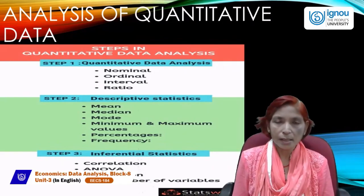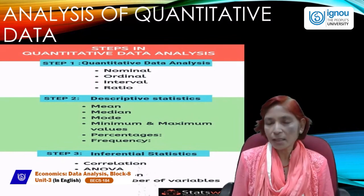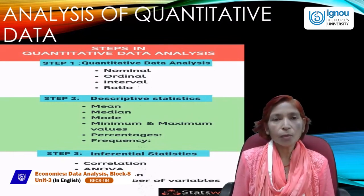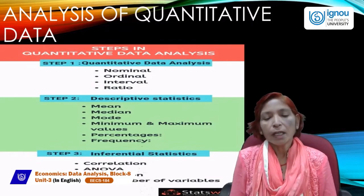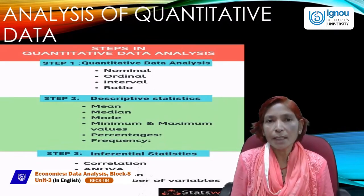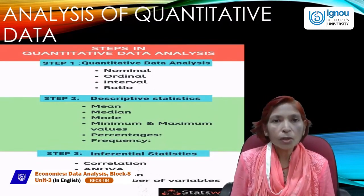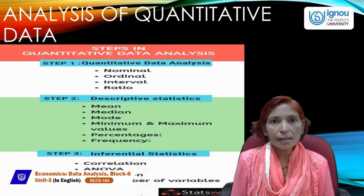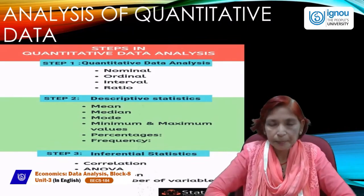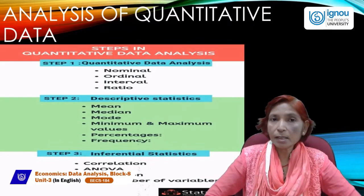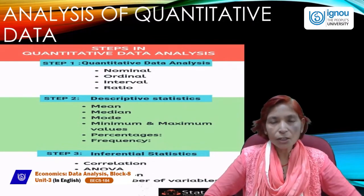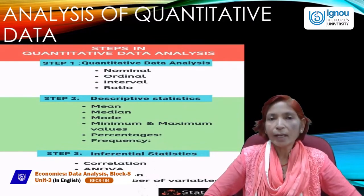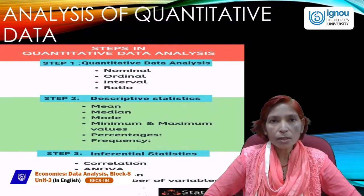Inferential statistics is also a branch of statistics. These two branches — descriptive and inferential — are most important. Inferential statistics is that branch in which we can conclude, analyze, or interpret the results. In the second step we summarize the collected data, and after summarization we can conclude or interpret what we have found from the collected data.